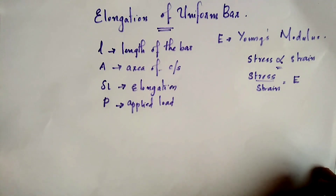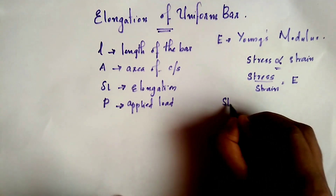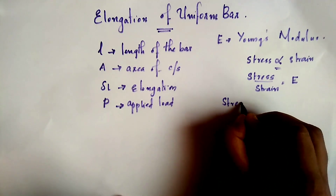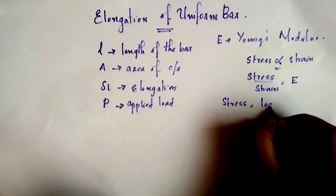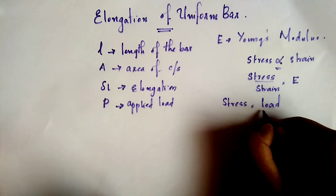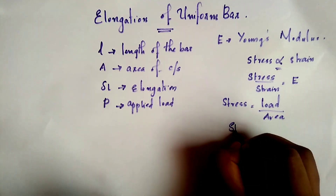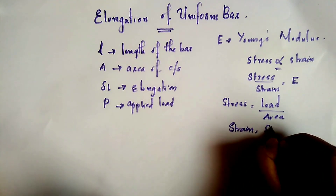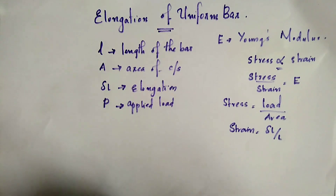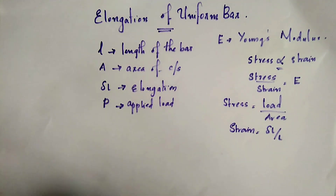Now, stress is defined as load divided by area — that is, force per unit area. That is stress. What is strain? Strain is change in dimension divided by original dimension. Delta L is the change in dimension, and L is the original dimension.